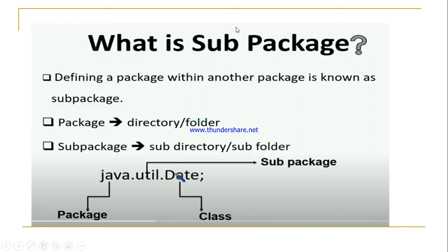The package is saved in a folder or directory. When you compile that package using the -d option with the package name, the compiler creates one class file within one separate folder. And when you create sub-packages, that folder has another folder inside it — a sub-directory.